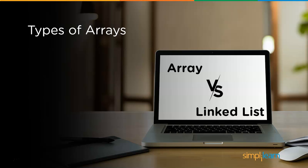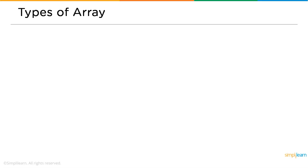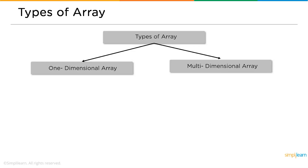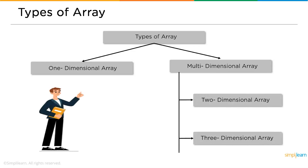Now let's understand the types of arrays. We have three types: one-dimensional arrays, two-dimensional arrays, and three-dimensional arrays. One-dimensional arrays have only one subscript, meaning one single row. Two-dimensional arrays have two subscripts — rows and columns. Three-dimensional arrays have three subscripts.